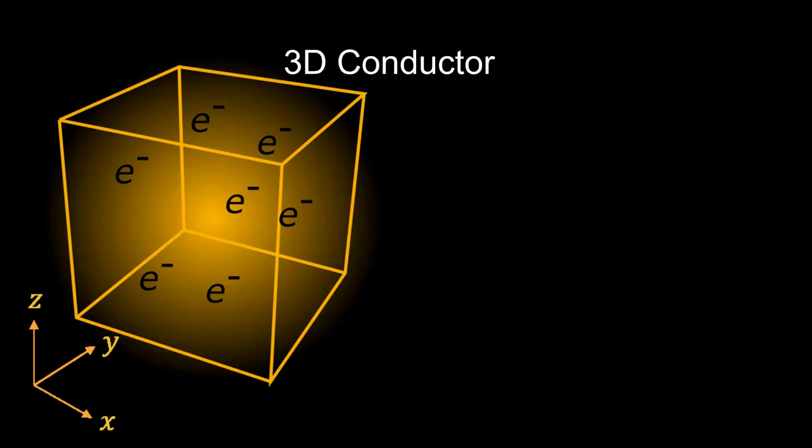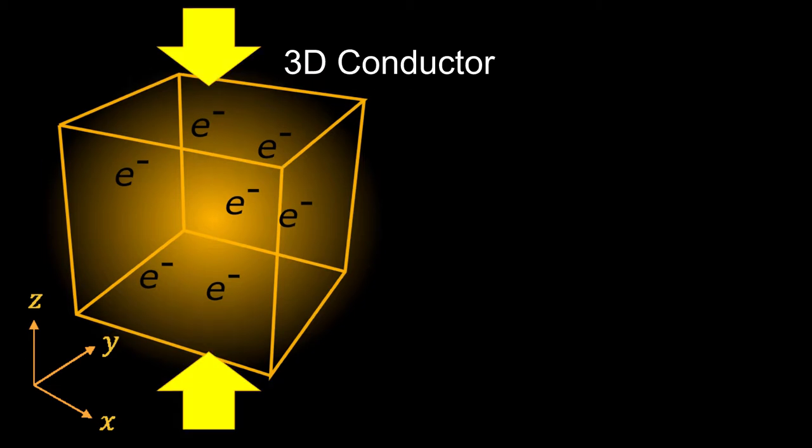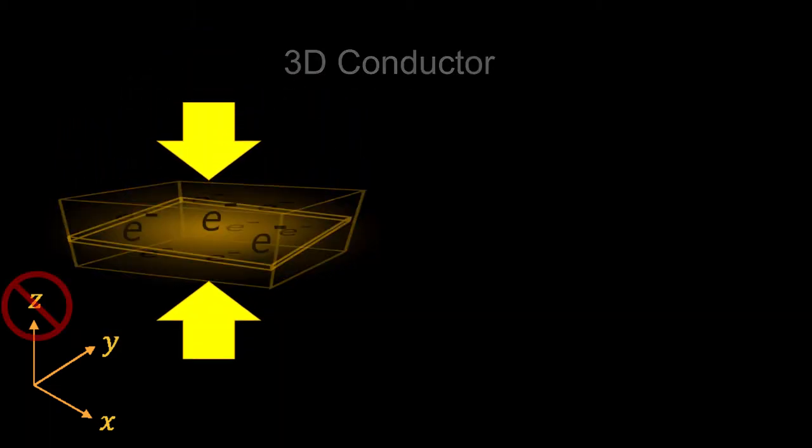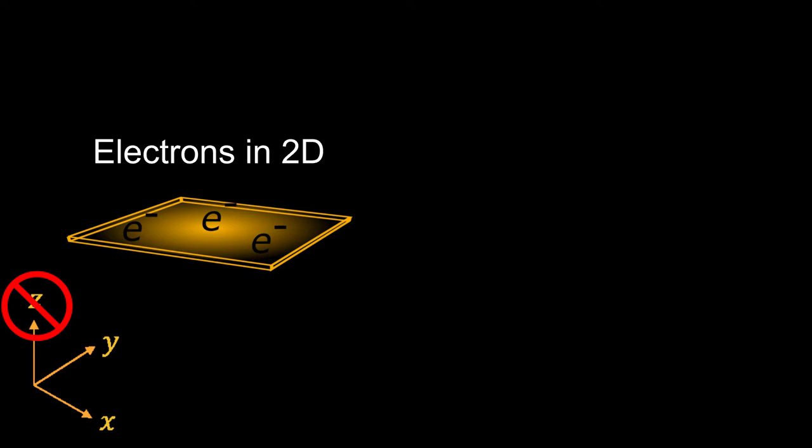Two-dimensional electrons are formed when a conductor, such as a metal or semiconductor, is made very thin. Then, the z-direction of motion becomes unavailable, and electrons are confined to move only in a single plane.